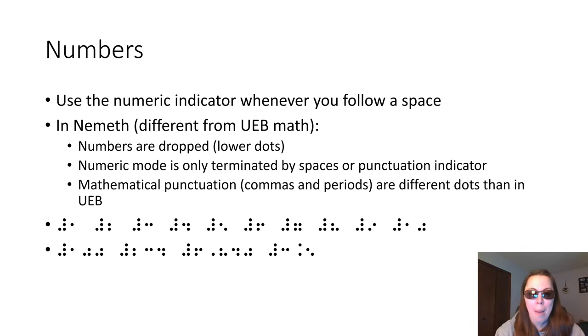So on to those numbers. How do we write numerals, digits, or numbers when we are in the Nemeth code? Nemeth numbers still start with a numeric indicator, dots 1, 4, 5, 6, and then the numerals have their own shape, a little bit different from UEB. They're similar but they're dropped to the lower half of the cell.